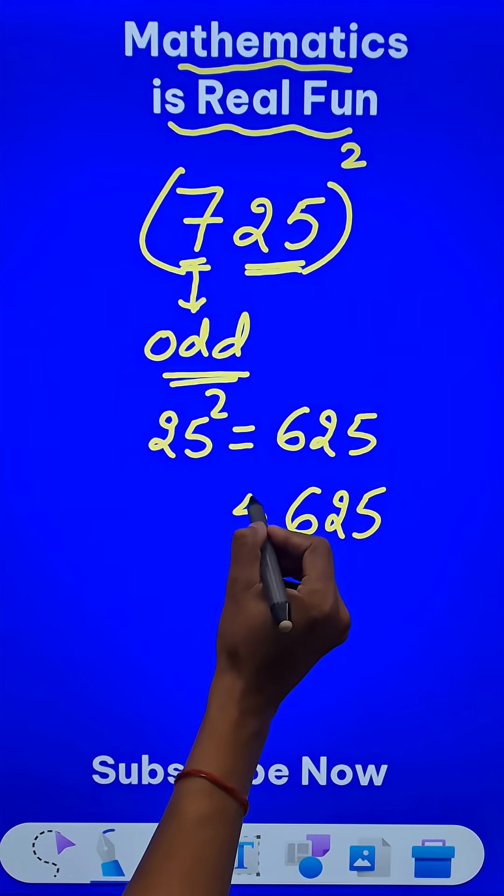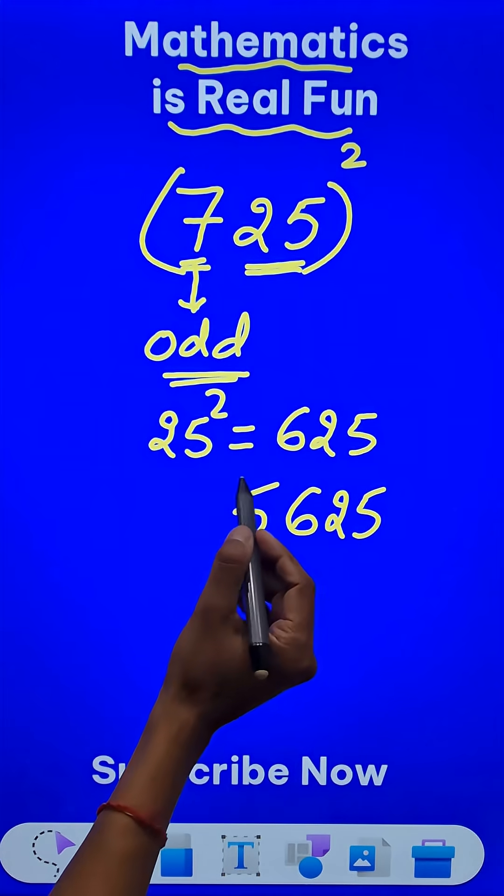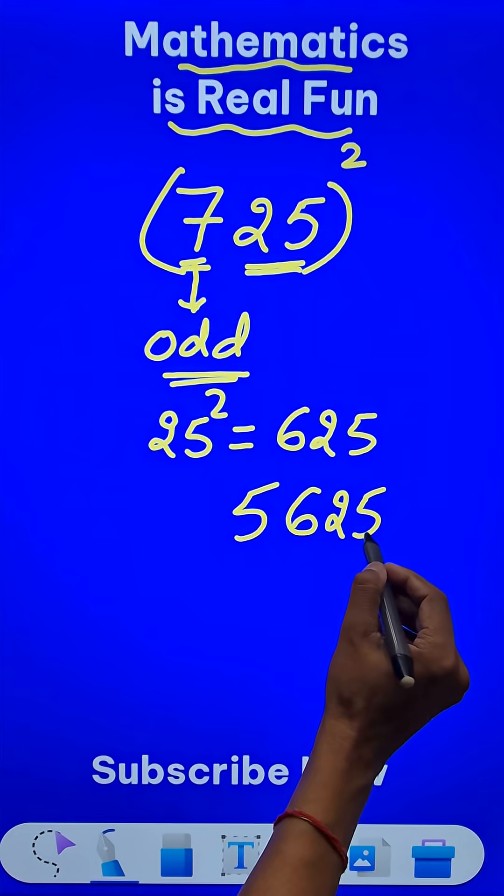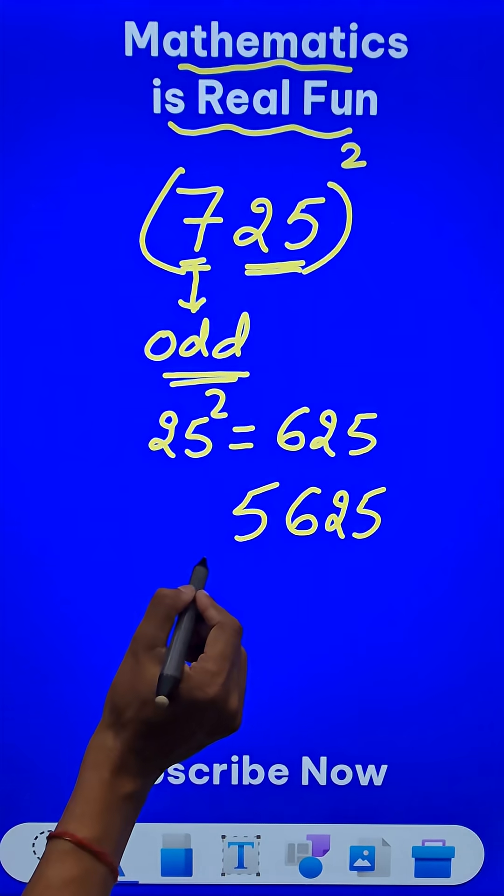we will prefix a 5 with 625, making it 5625. But that is not the complete answer. There is one more part left out.